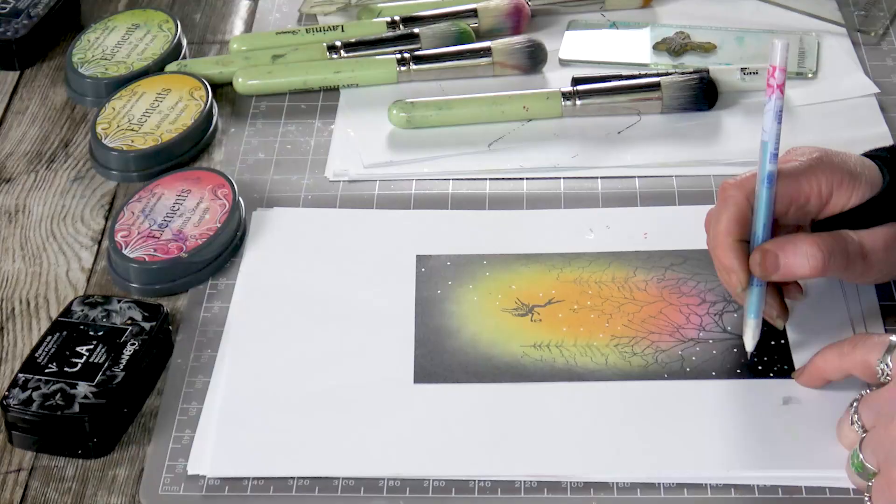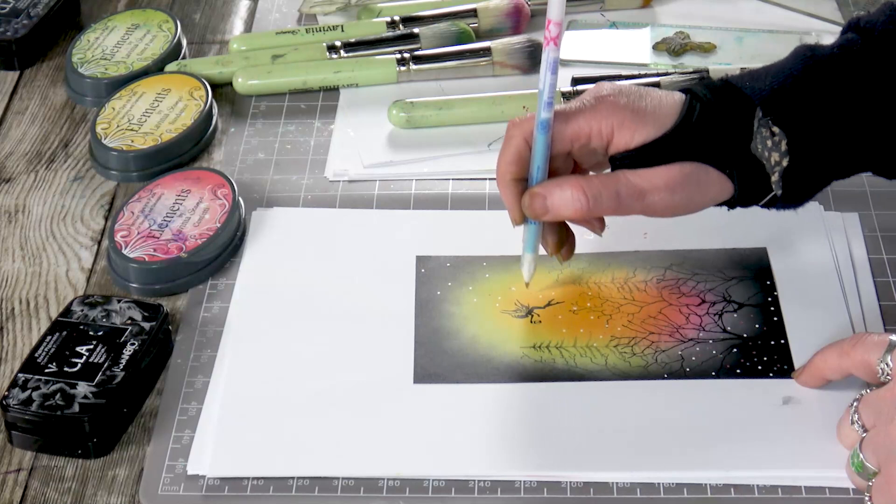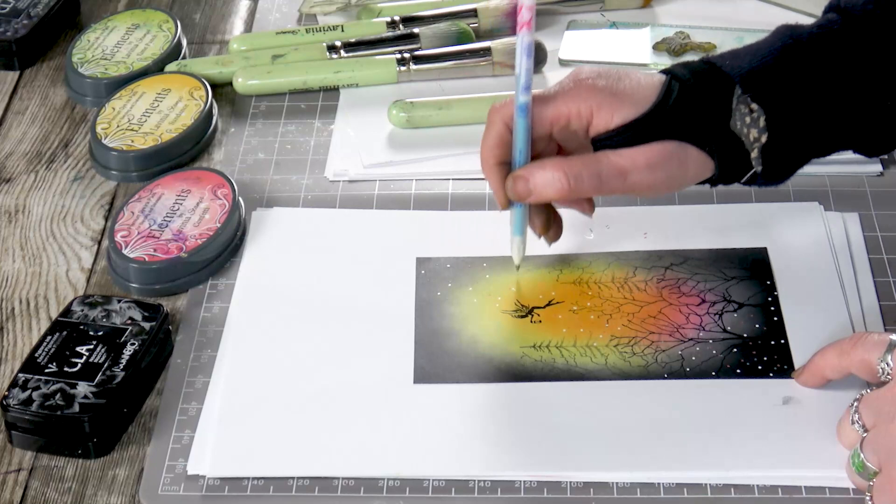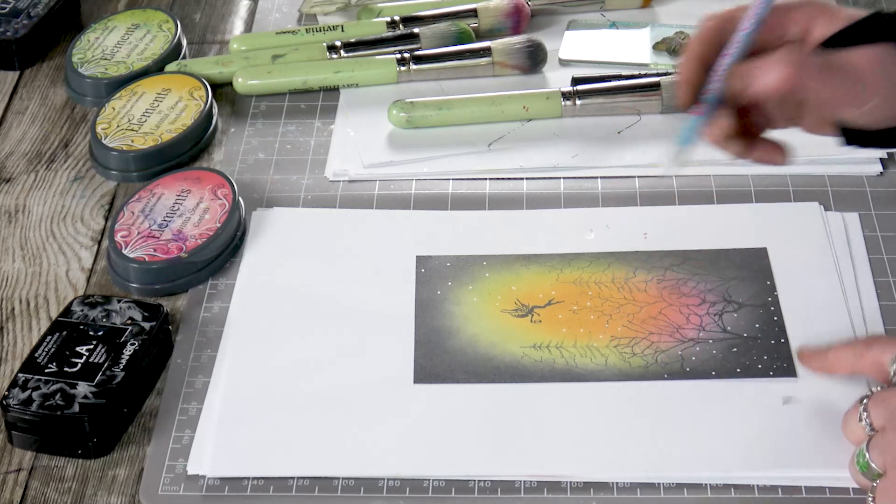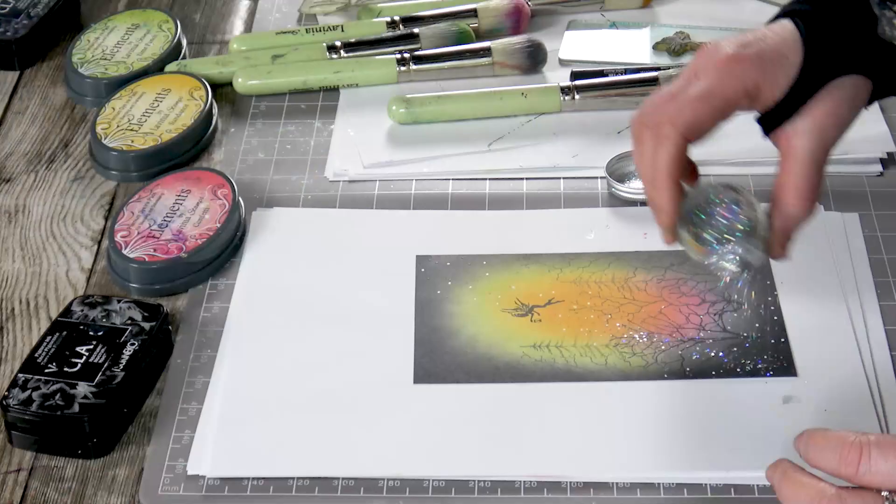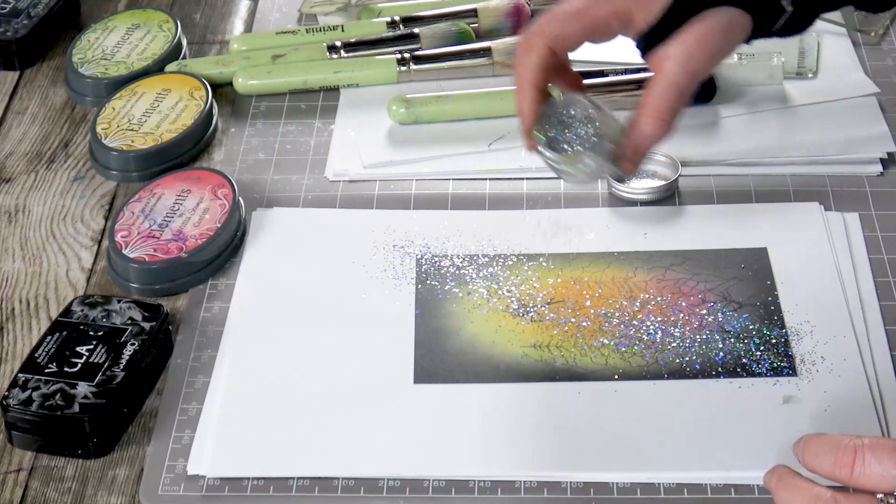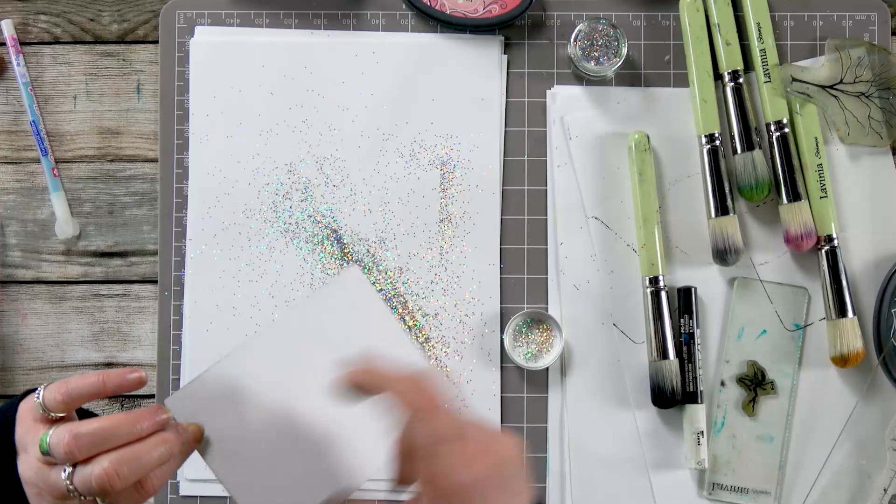And lastly, we've got our glue pen here and I'm just going to dot a few dots over in a sort of diagonal effect and then sprinkling a tiny bit of holographic glitter, this will really make it jump out.